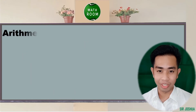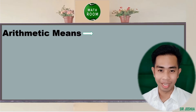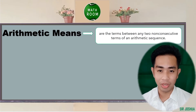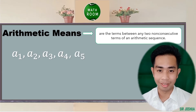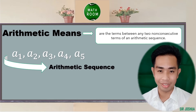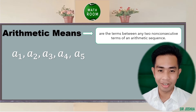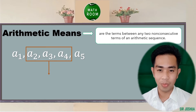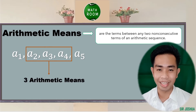Arithmetic means are the terms between any two non-consecutive terms of a given arithmetic sequence. If we have a sub 1, a sub 2, a sub 3, a sub 4, and a sub 5 as our arithmetic sequence, we have three arithmetic means: a sub 2, a sub 3, and a sub 4.